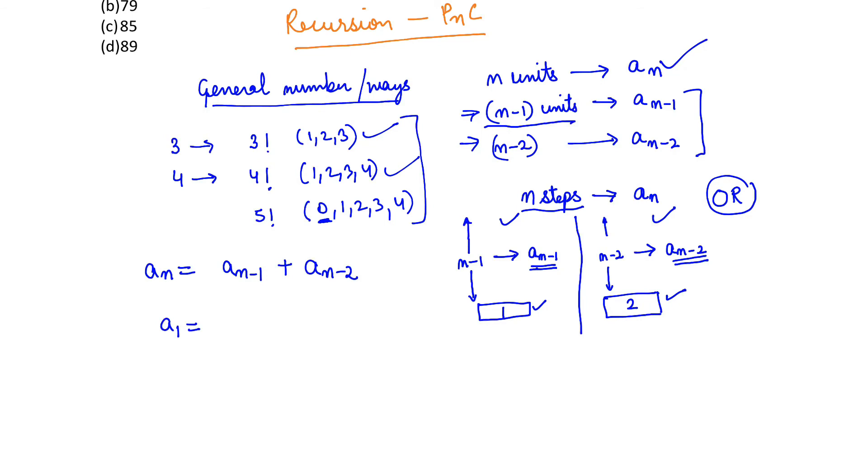Now we need to find a_1. If there's a one-step staircase, how many ways can you do it? One way. If there's a 2-step staircase, how many ways? You can do one-one, or directly two - that's two ways. After that, when we need to find a_3, we know a_3 is a_2 plus a_1, which is 2 plus 1. So we keep adding the previous two.